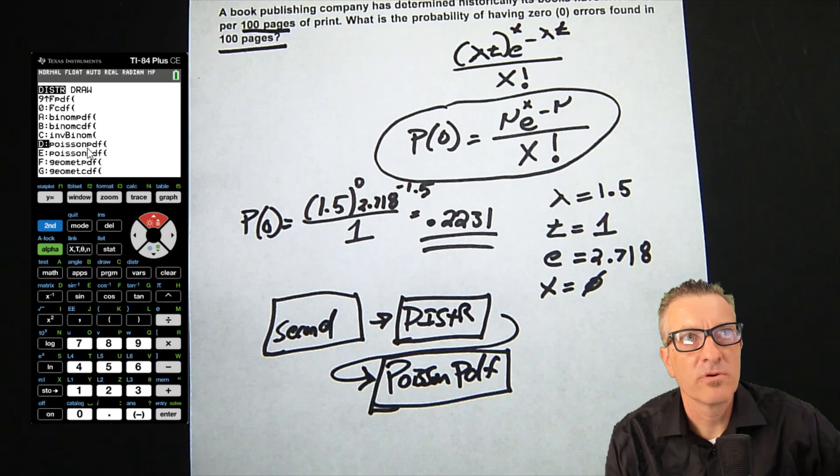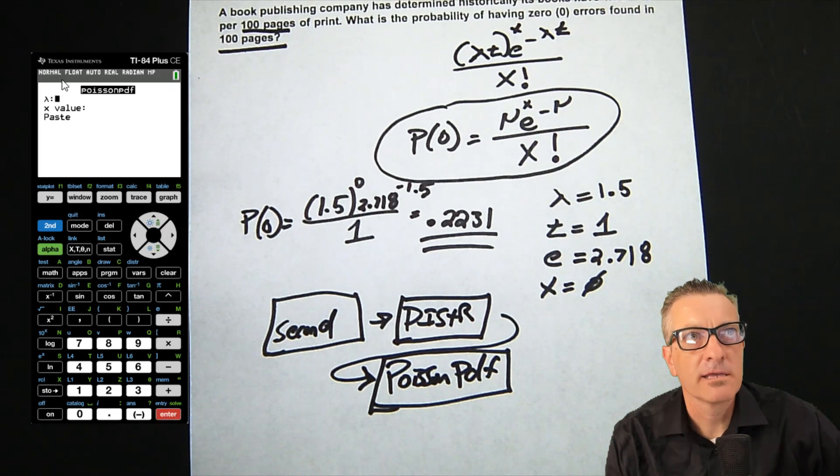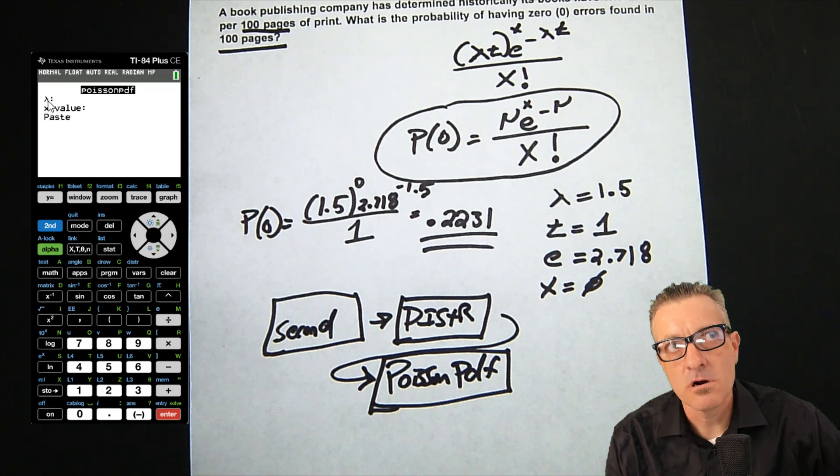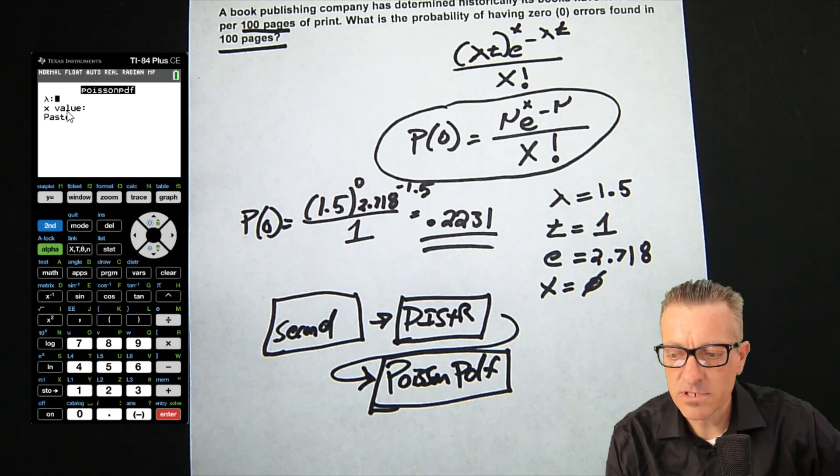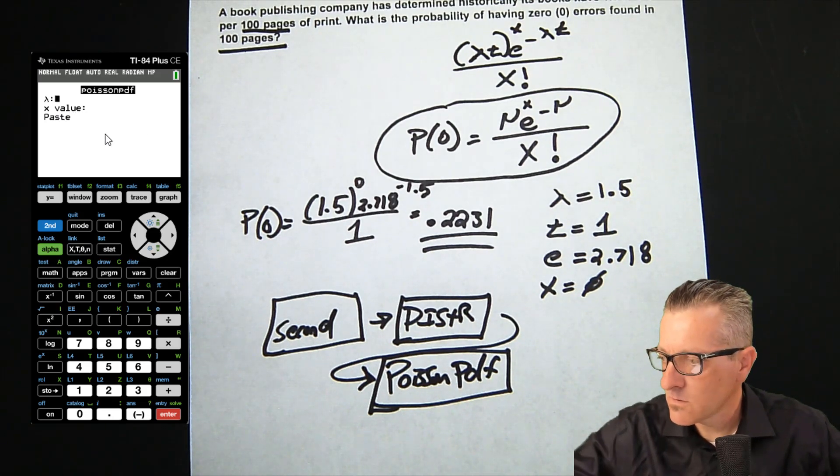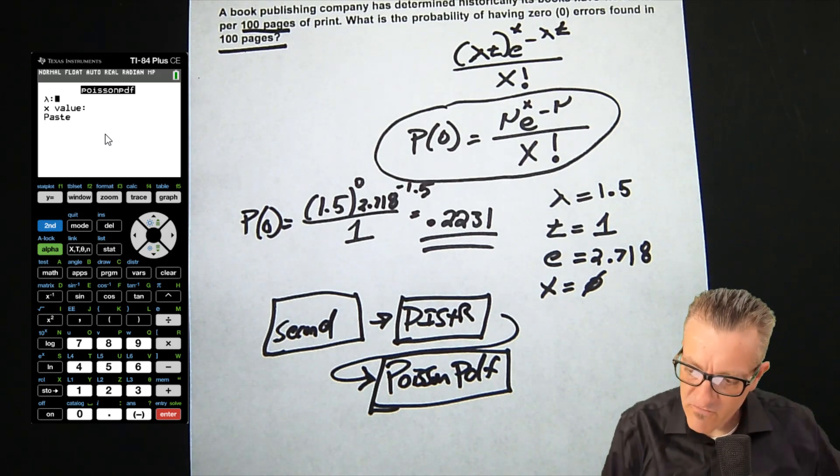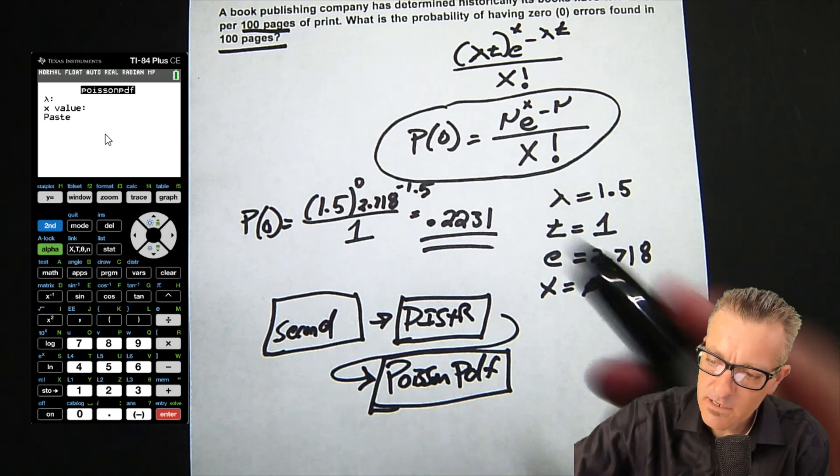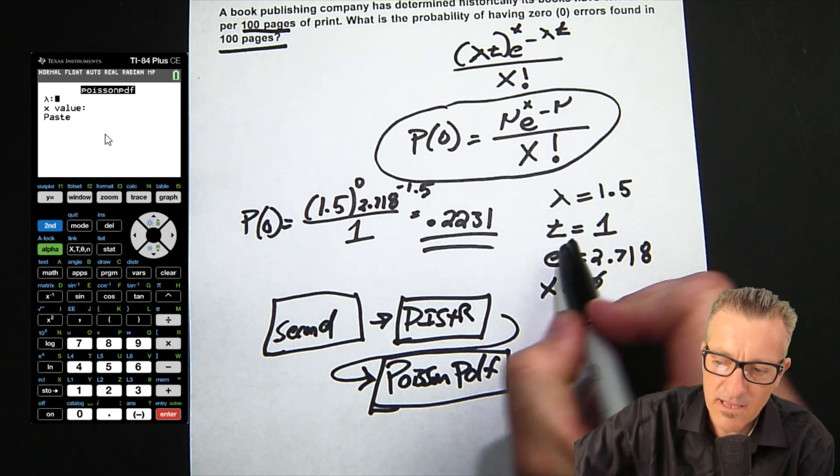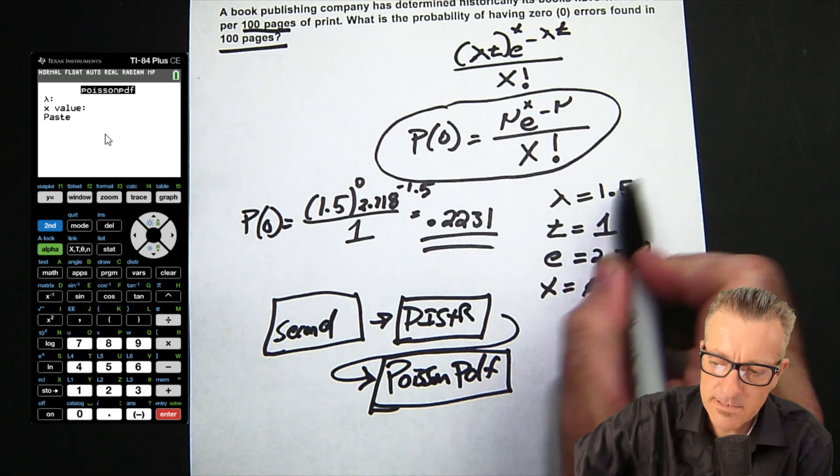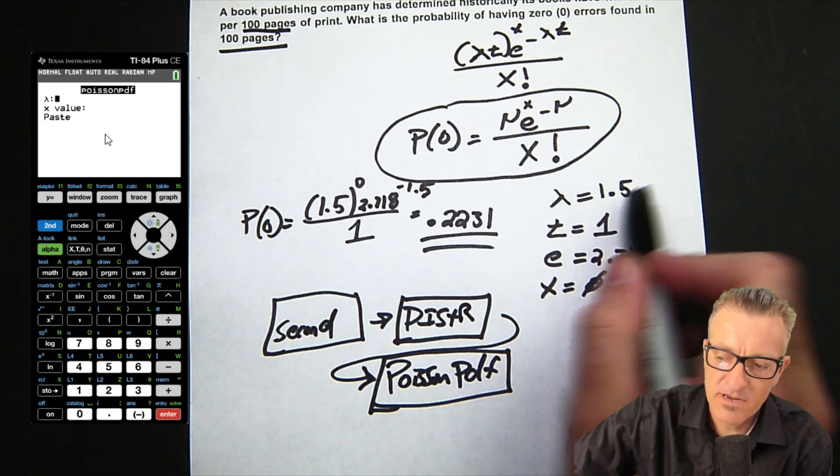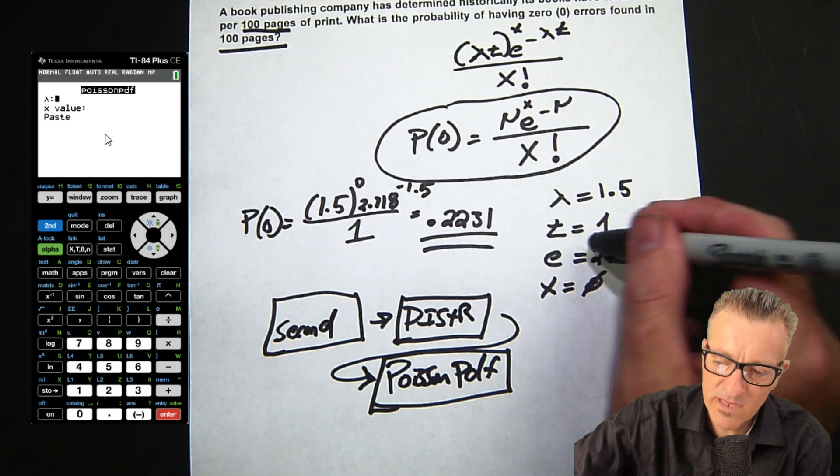Okay, so Poisson PDF—hit enter. Like I said, this is very easy. For our lambda, we want to put in our Poisson parameter, which was our mu that we worked with. For us, we put in—it's the same either way because when you multiply 1.5 times 1, we get 1.5.